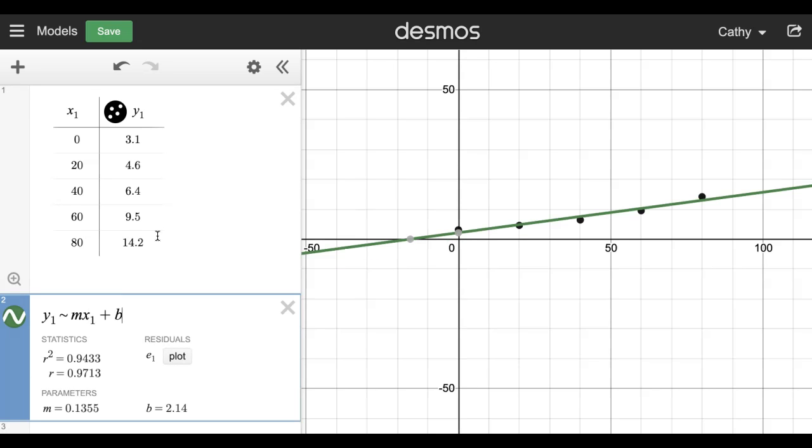So mx plus b is the linear model and I'm telling Desmos to use y1 from this column of data and x1 from this column of data, and it shows me the line and that's pretty good.